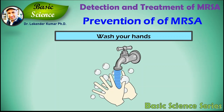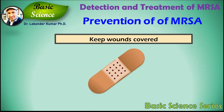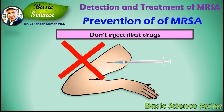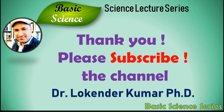Let's discuss the very important topic of how to prevent MRSA infections. Ways to prevent MRSA infections include: first, regularly wash your hands; second, keep injuries covered; third, keep personal items personal; fourth, regularly shower after athletic games or sports practices; fifth, do not inject illicit drugs.